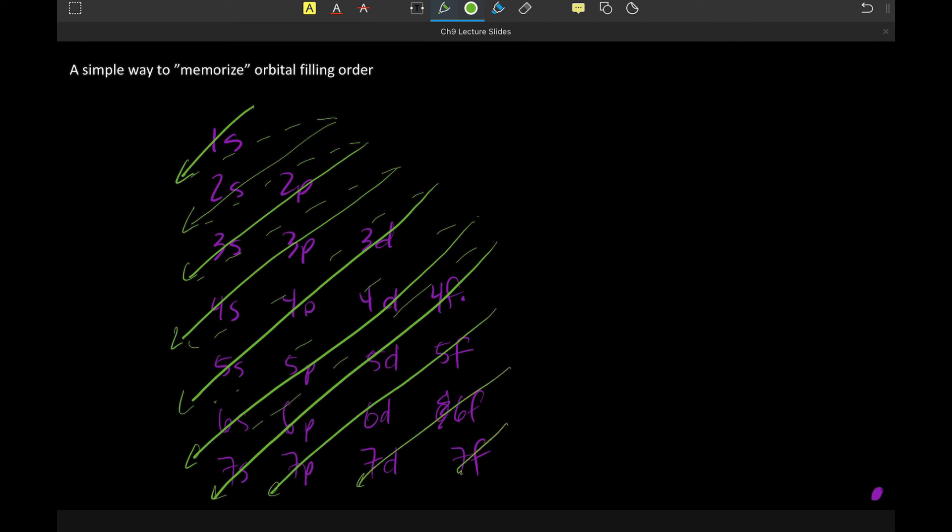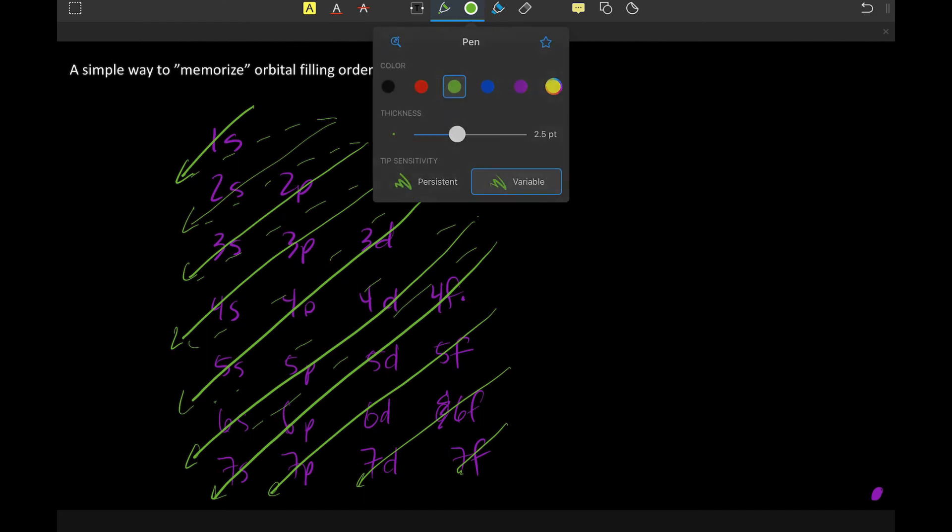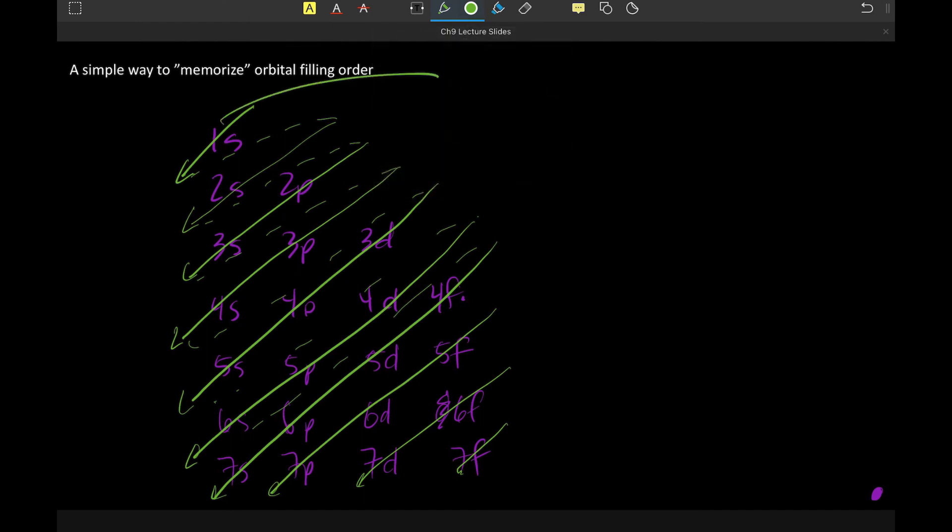And then it's just up to you to remember that this one is a set of always 1. S's always come in a set of 1, p's are always a set of 3. D's are always a set of 5 orbitals. And f's are always a set of 7. In terms of how many sets they are, this should say always 1.